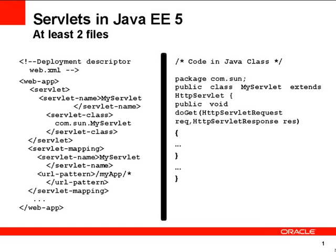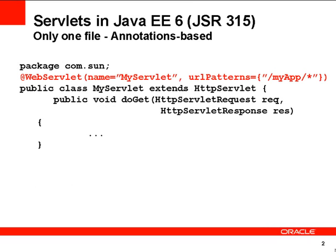So let's look at the very first thing about Java. As you write servlets up until now in Java EE 5, you need at least two files. As you can see, on the left you have a deployment descriptor and on the right what you have is a class. You need at least these two files to get your servlet running.